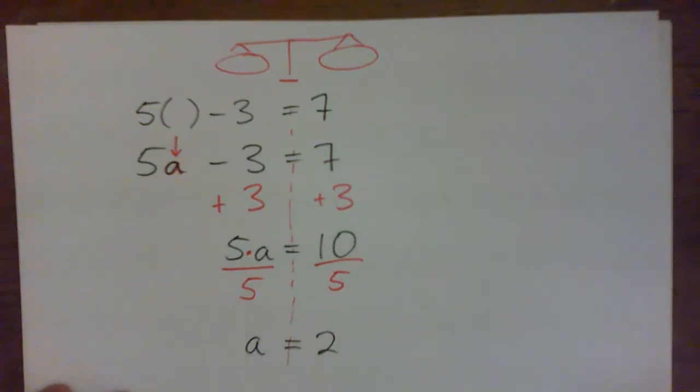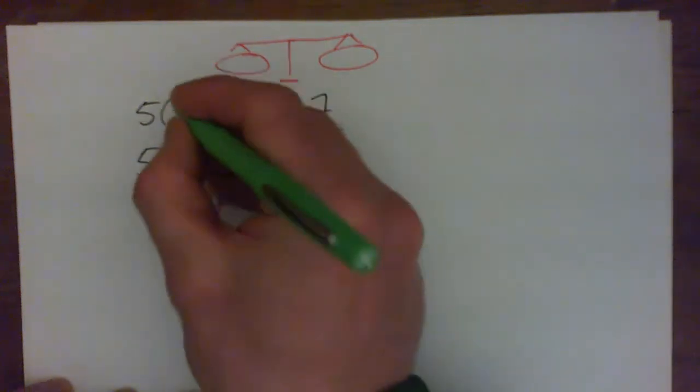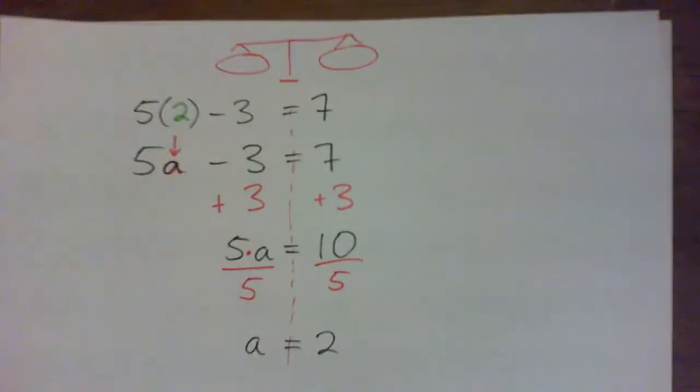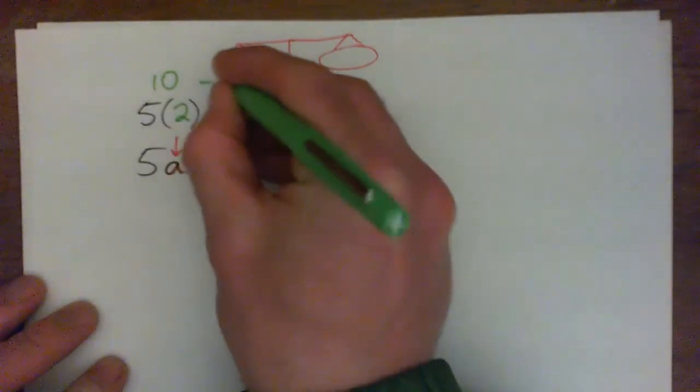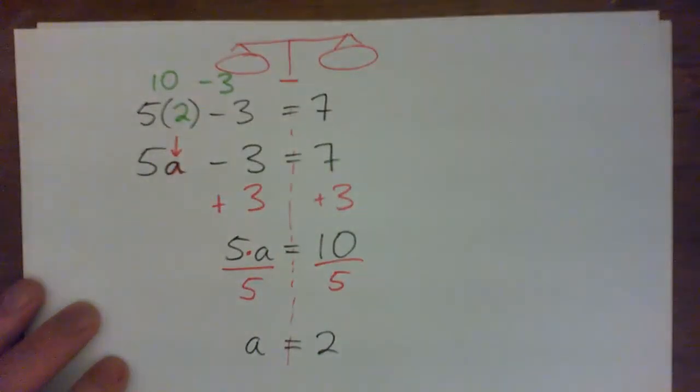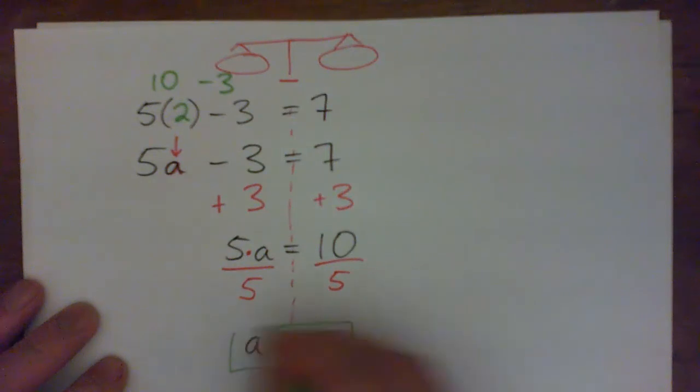So 2 should be the answer. And if we check that, like if we had guessed 2, then it should all work out. Because 5 times 2 is 10, 10 minus 3 is 7. So 2 is the correct answer there.